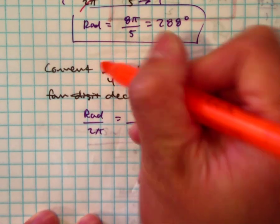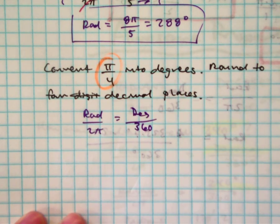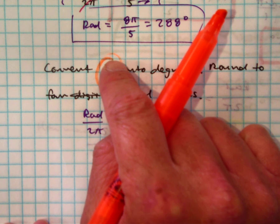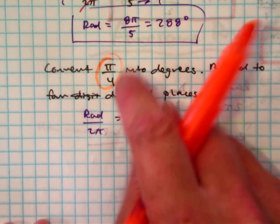We have, this is radians. How do I know that's radians? It has π in it, right? And there's no degree symbol.